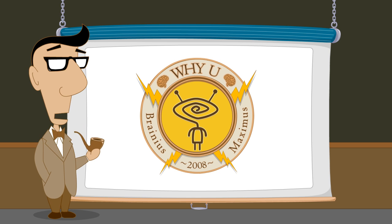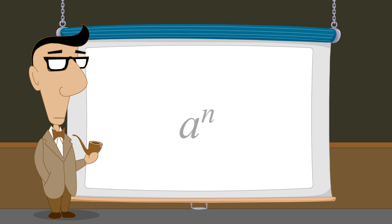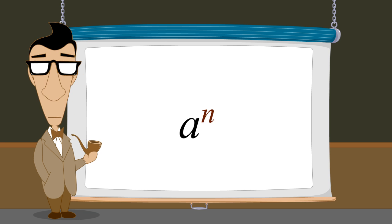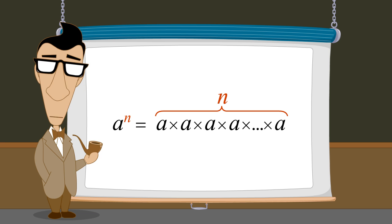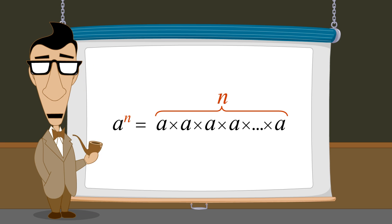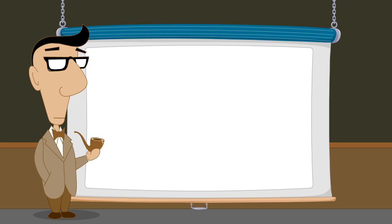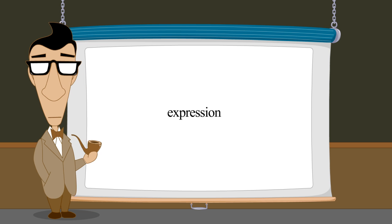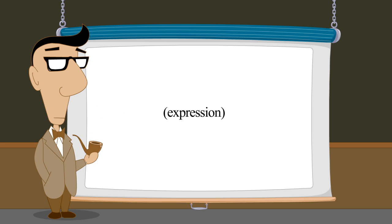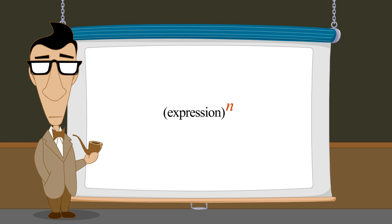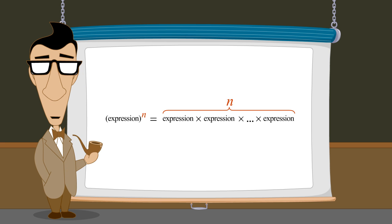When we first introduced the concept of exponents, we saw that any number a raised to the n-th power, where n is a positive integer, is equivalent to n a's multiplied together. This is true not only for numbers and variables but also for expressions. If we enclose an expression in parentheses, we can raise the entire expression to a power, which is equivalent to n copies of the expression multiplied together.